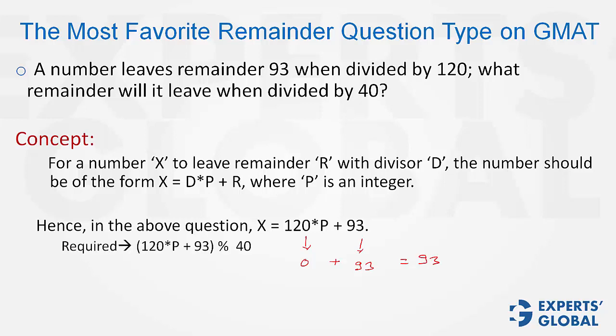So the required number is 120P plus 93, the remainder with 40. Now imagine 120P when divided by 40 is going to give remainder 0, no matter what P is, because 120 is a multiple of 40. 93 will always give remainder 13 with 40, and therefore, practically, the answer is 0 plus 13, which is 13.